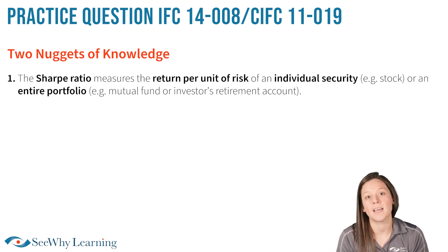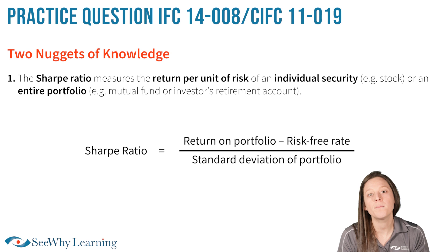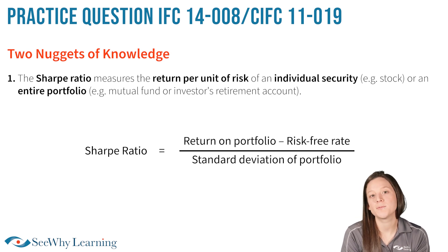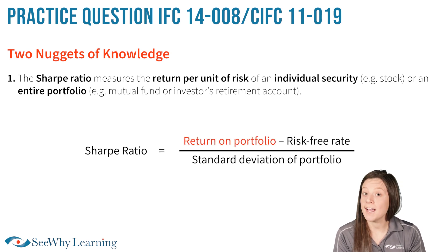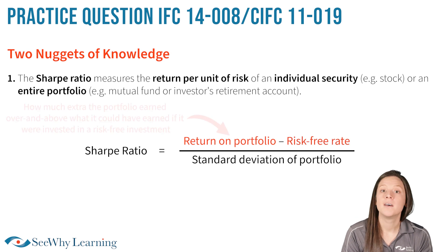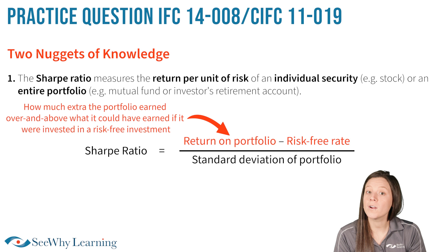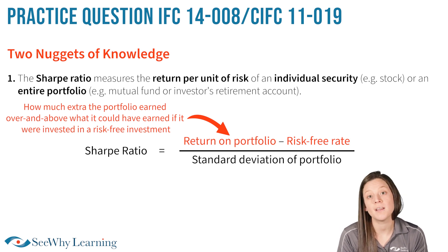Depending on the course you're taking, the actual formula may be beyond the scope of what you need to know, but let's still take a look at it because it will help you better understand the concept. Let's consider a portfolio as we discuss the Sharpe Ratio. On the top of the formula, you find the return of the portfolio, less the risk-free rate of return. So basically, how much extra did the portfolio earn over and above what it could have earned if it were invested in